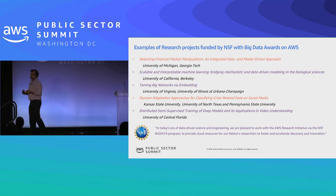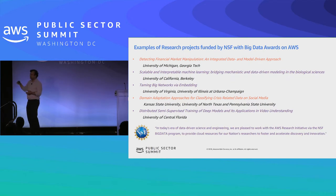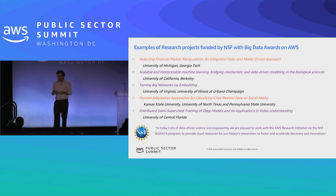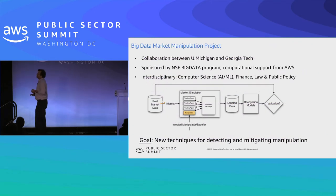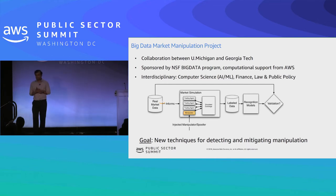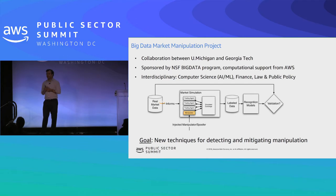One topic I'll touch on is disaster management, though many award winners are working on AWS. The particular study I'll focus on is called 'Big Data for Market Manipulation,' done by the University of Michigan in collaboration with AWS and the National Science Foundation. The goal of this study is to find a mechanism to detect or mitigate market manipulation.